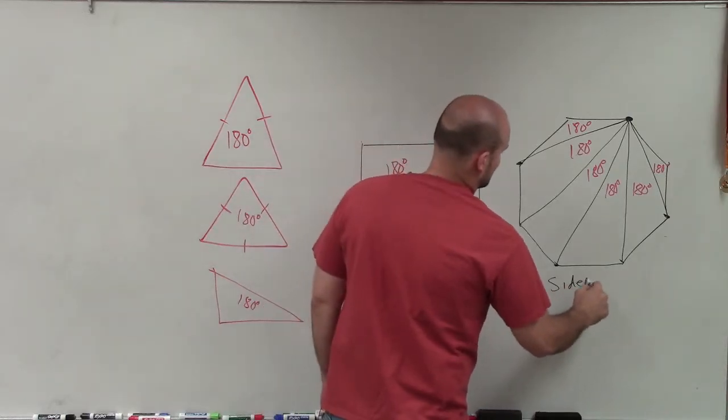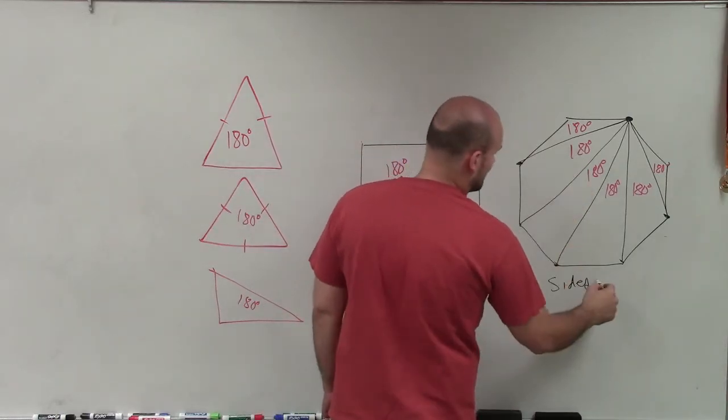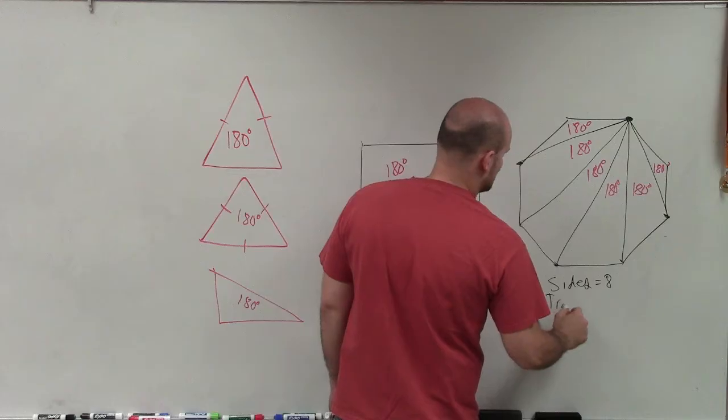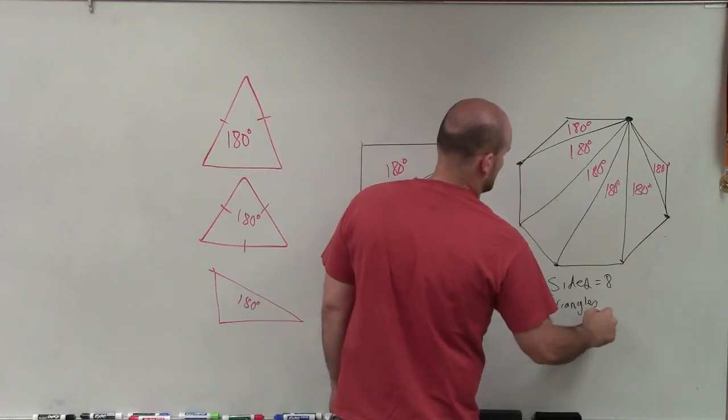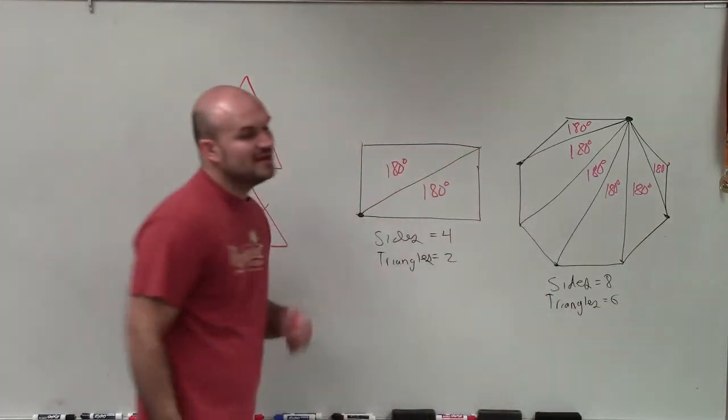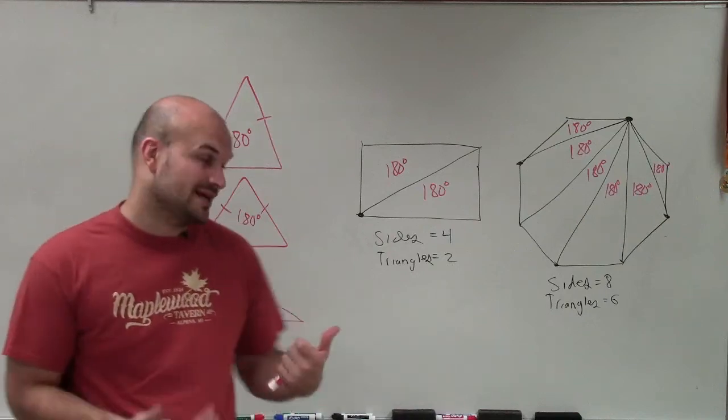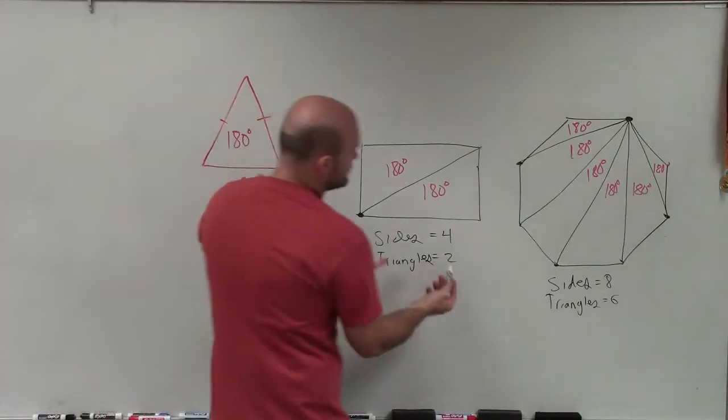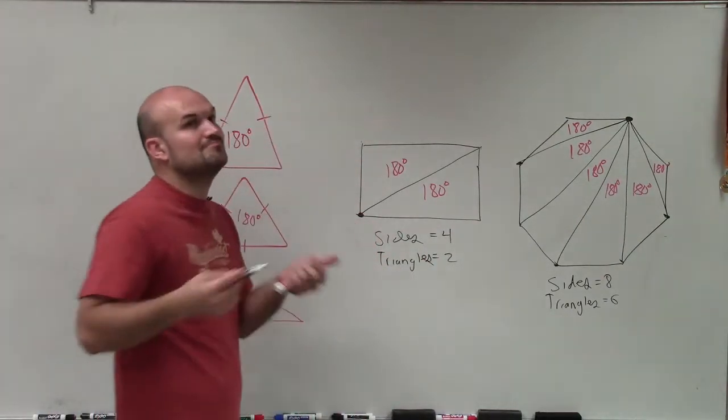Here, the sides are equal to 8. And the triangles is equal to 6. And if you repeat this for all polygons, what you'll notice is the number of triangles related to the sides is always minus 2.